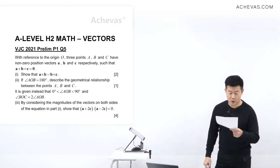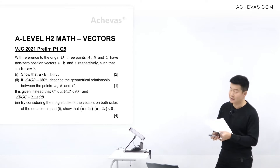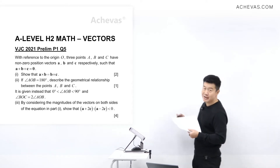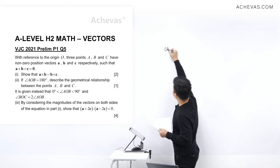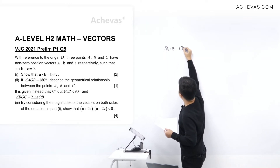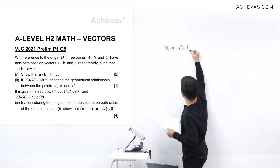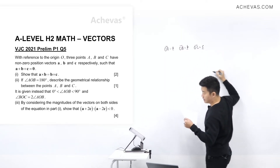With reference to the origin O, the three points A, B, C have position vectors a, b, and c. So given that OA position vector is a, OB is equal to b, and OC is equal to vector c.